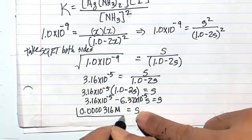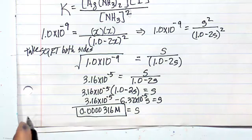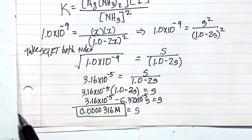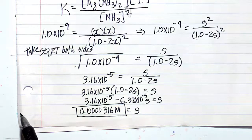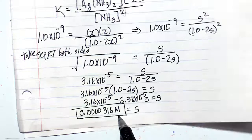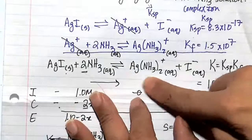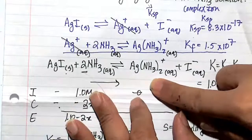To summarize this problem: we have the Ksp reaction which gives us Ag⁺. Immediately, the Ag⁺ forms a complex ion and solubilizes. That solubilization is driven by the complex ion formation.